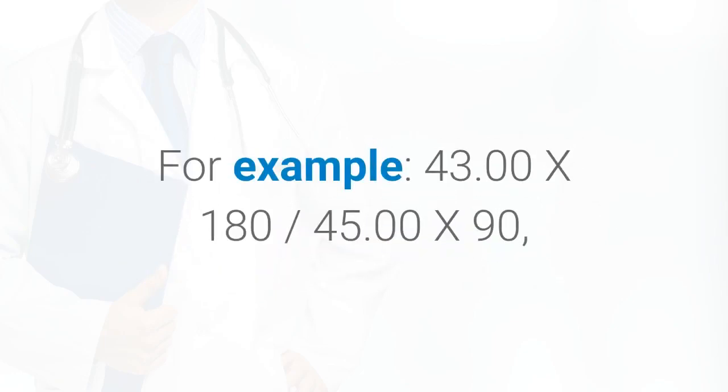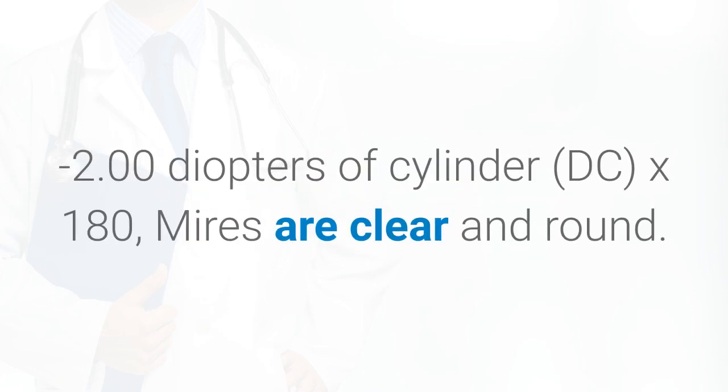For example, 43.00x180, 45.00x90, minus 2.00 diopters of cylinder DC x180, mires are clear and round.